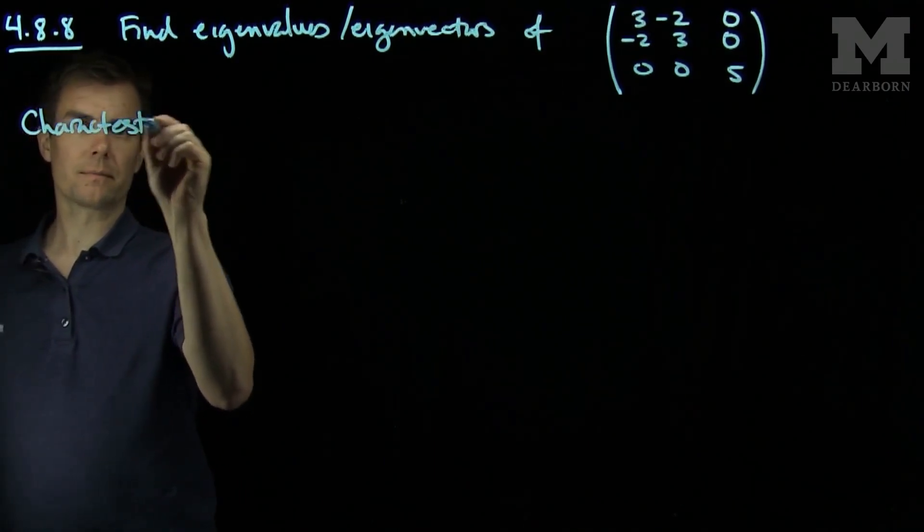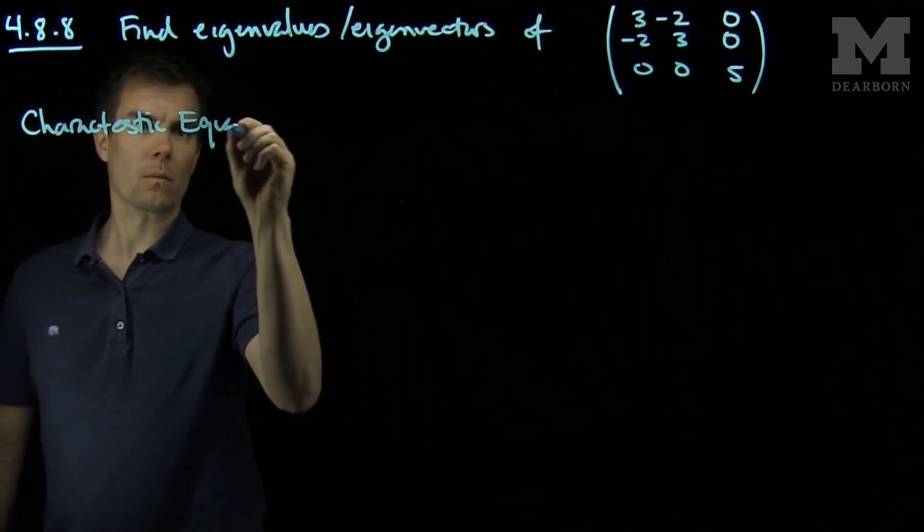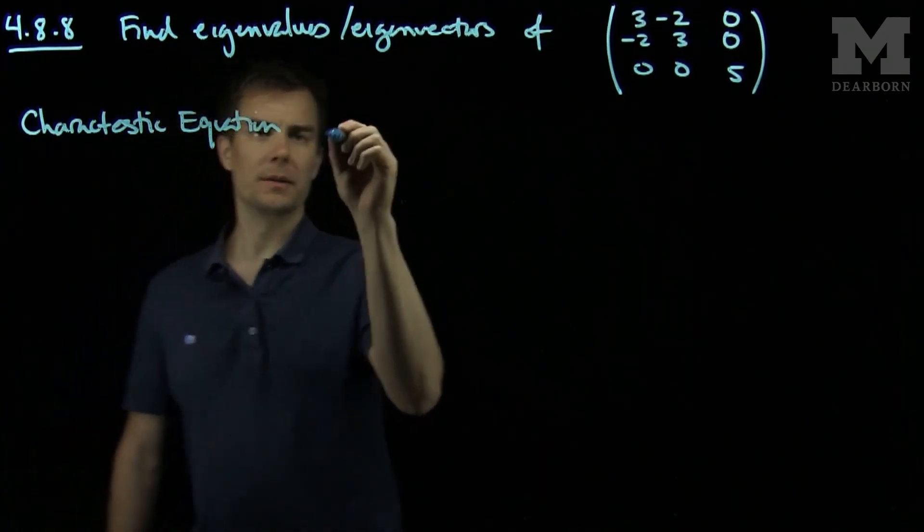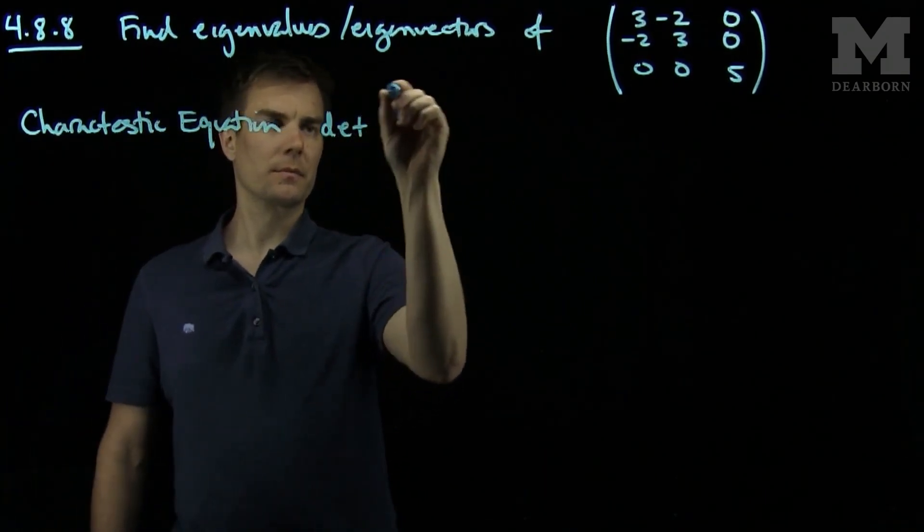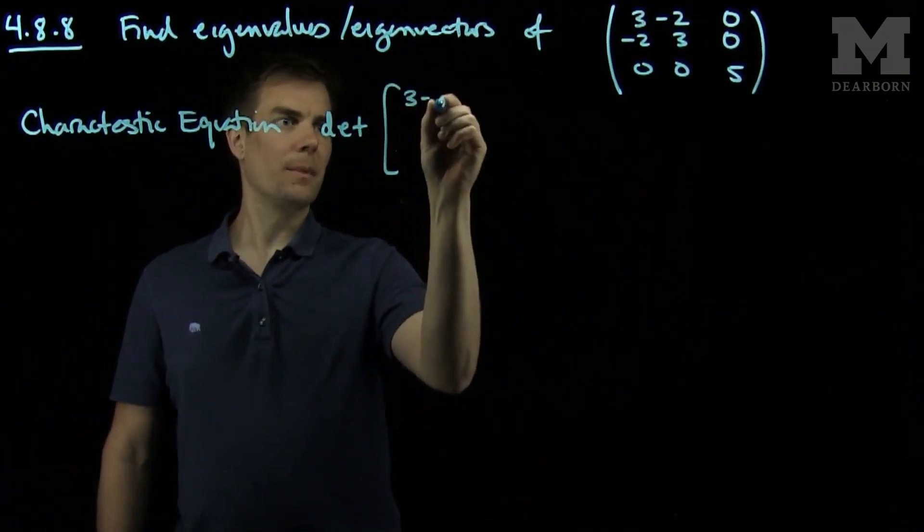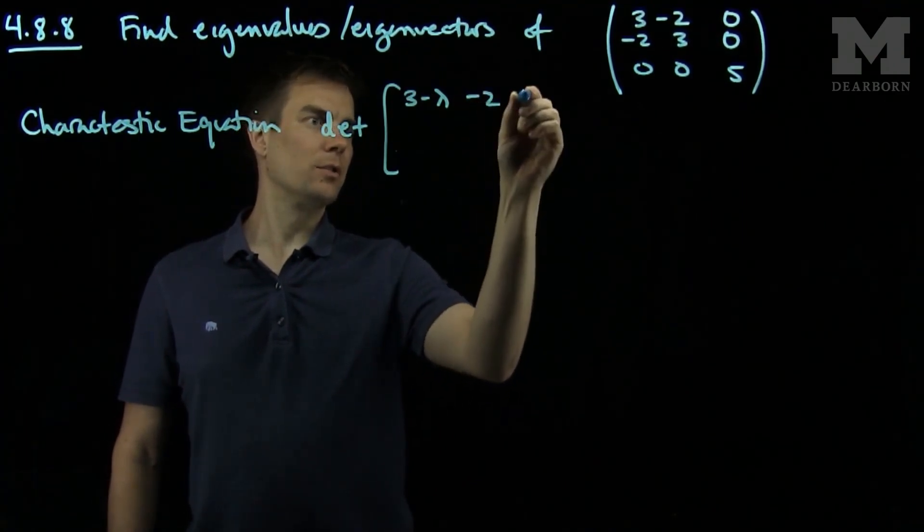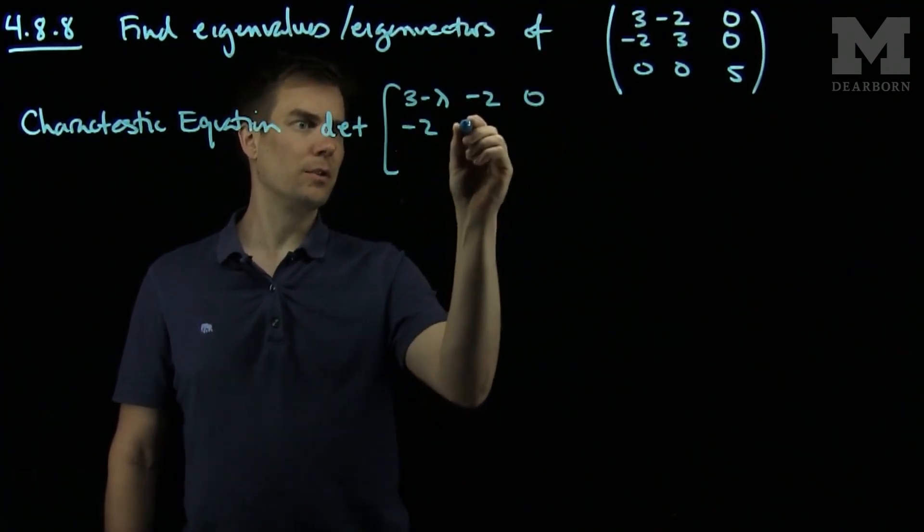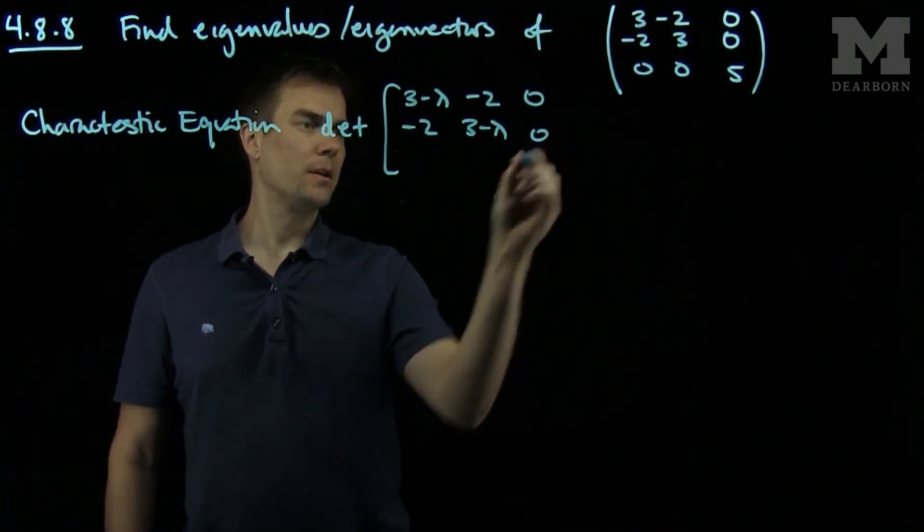The characteristic equation is the determinant of 3 minus lambda, negative 2, 0, negative 2, 3 minus lambda, 0.